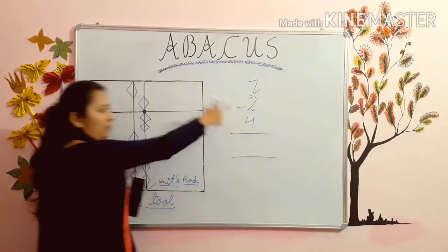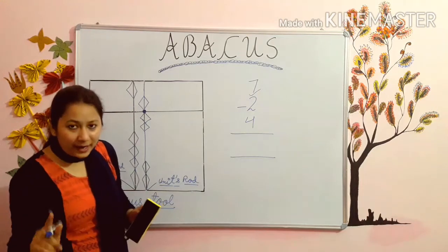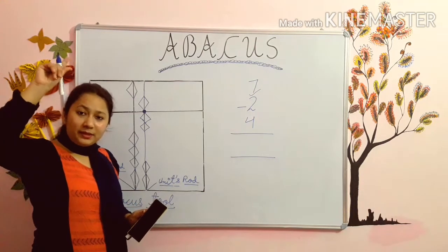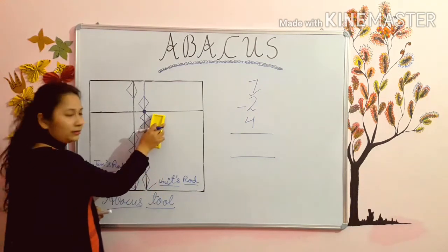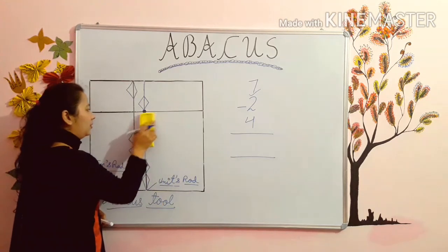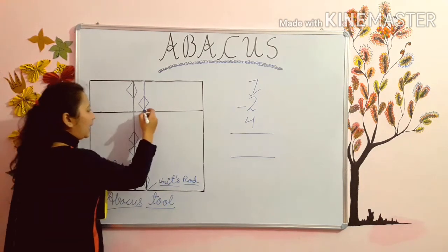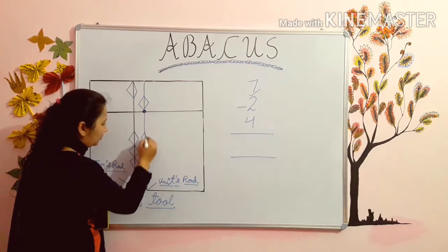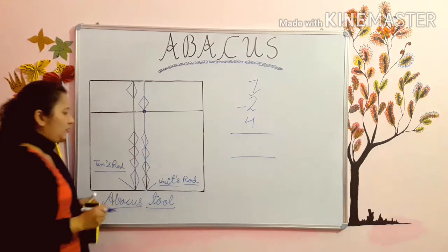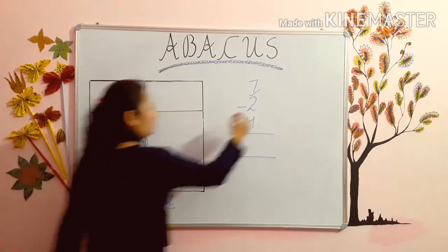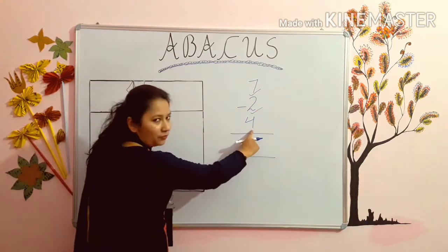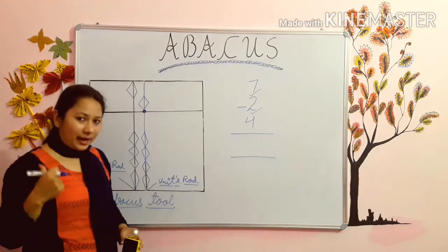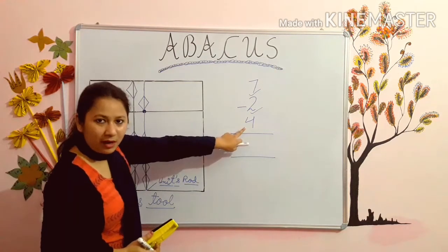Now minus 2. Minus 2 means subtract — you have to subtract 2. How you subtract? I have told you — you have to put the beads down. Can you see 2 here? Put the beads down. I am doing on whiteboard. 2 beads down. Now we have done minus 2. Now we have to add 4. Add 4 means plus 4, and you have to do the beads up. For adding — up. For minus — down. So what you have to do? Plus 4. So put your beads up.